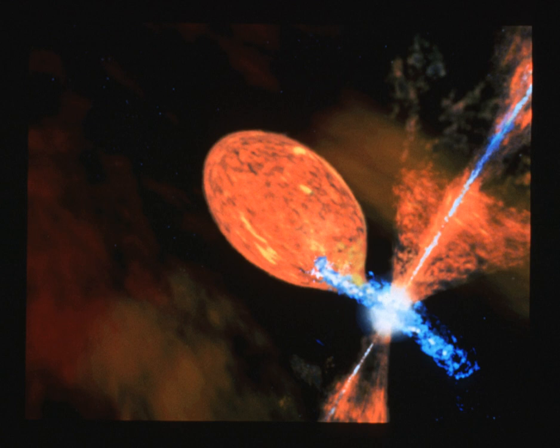A symbiotic binary is a type of binary star system, often simply called a symbiotic star. They usually contain a white dwarf with a companion red giant. The cool giant star loses material via Roche-lobe overflow or through its stellar wind, which flows onto the hot compact star, usually via an accretion disk.